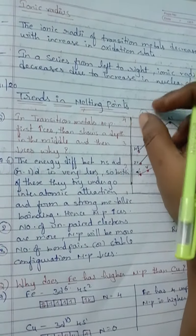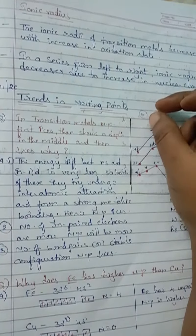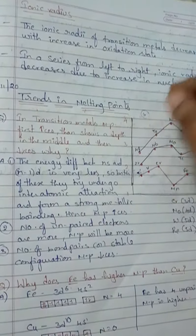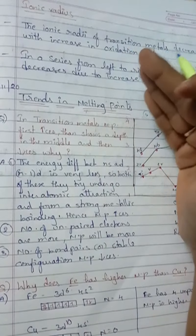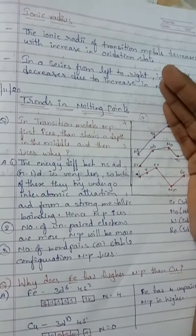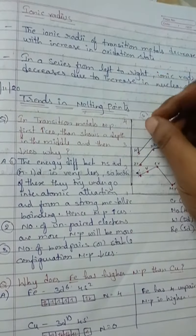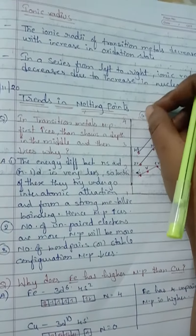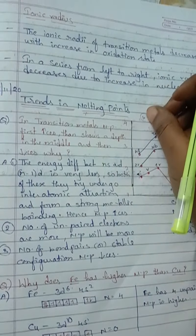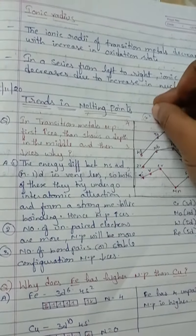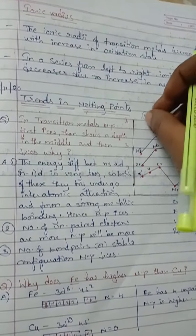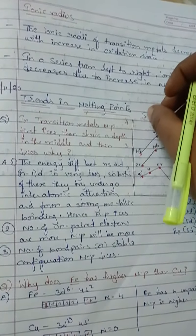When the attraction is more, a strong metallic bond will be formed. To break that bond, we require higher and higher energy. The bond formed between the Ns orbital and N-1d orbital — when the interaction is more, a strong bond will be formed.